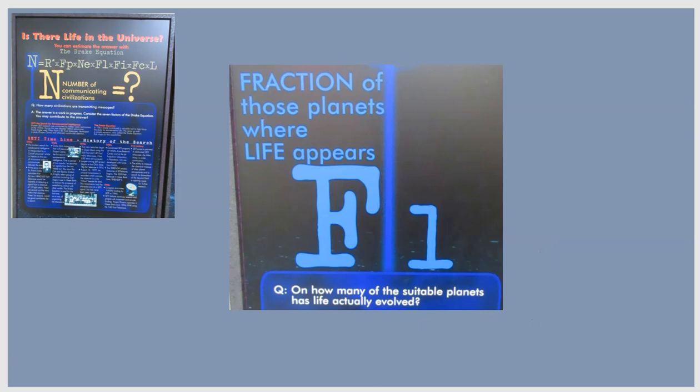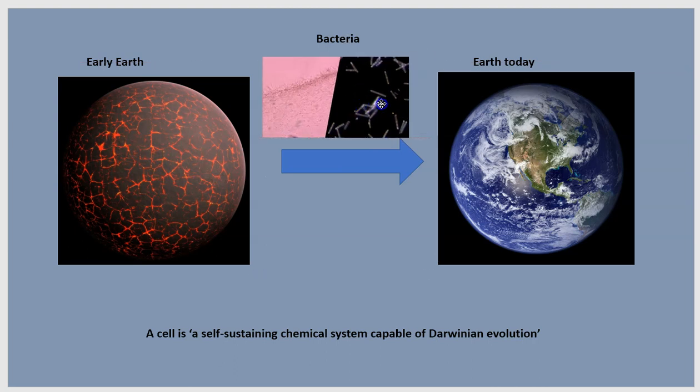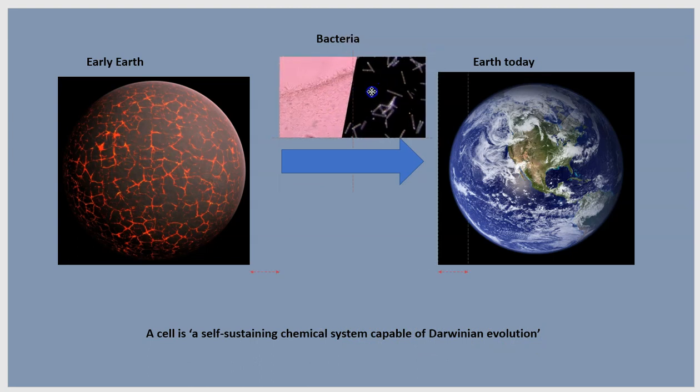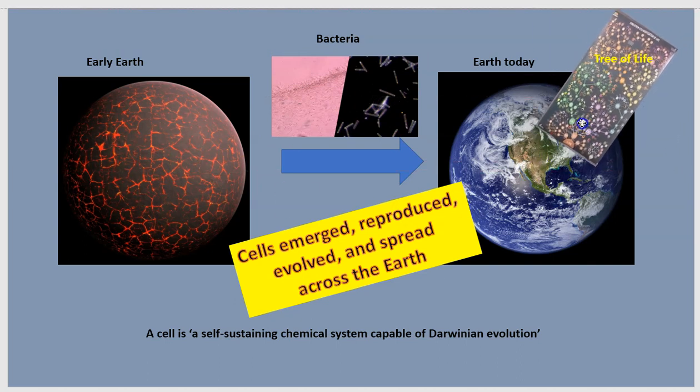The next term in the Drake equation is the fraction of habitable planets where life emerges. On Earth, four and a half billion years ago there was no life. Today, the planet is teeming with millions of species of living things. The key transition was the origin of a living cell, the simplest kind of cell we know of: bacteria. NASA defines life as a self-sustaining chemical system capable of Darwinian evolution. A cell is the smallest unit of life on Earth. This was the smallest, simplest living thing that emerged from chemistry and then went on to evolve into millions of living species on Earth today. We'll call that the tree of life.